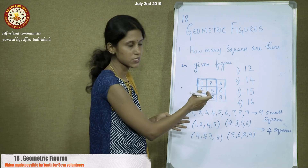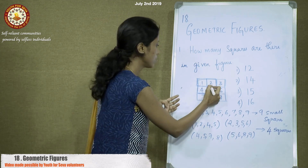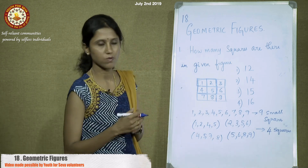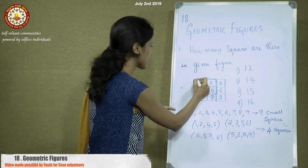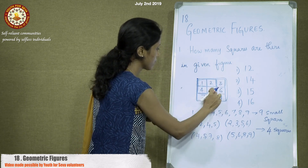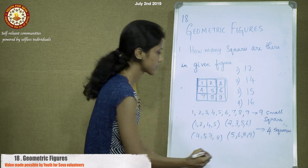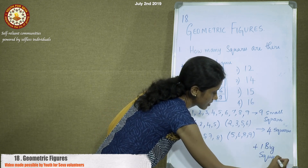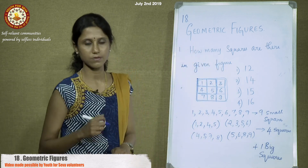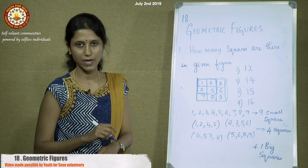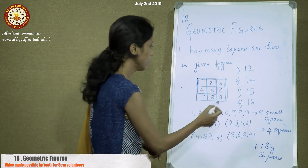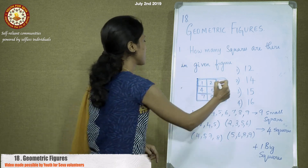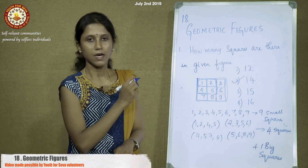If we consider all 9 segments together, that is the big square itself — 1 big square. So the total count is: 9 small squares plus 4 medium squares plus 1 big square. That is 9 plus 4 is 13, and 13 plus 1 is 14. So 14 is the answer, and it matches the second option. This method is applicable for every problem — name the segments appropriately and count each combination.